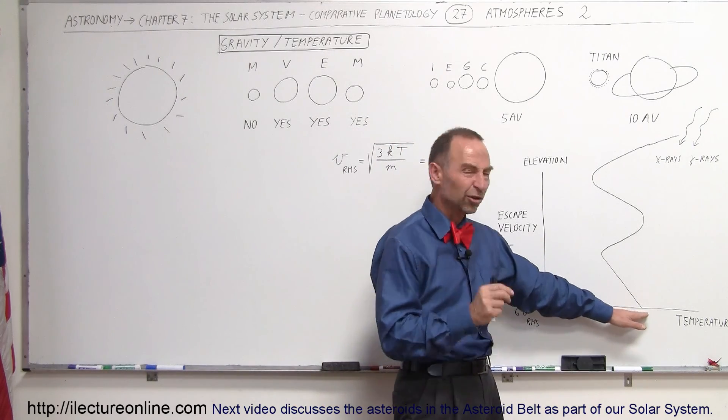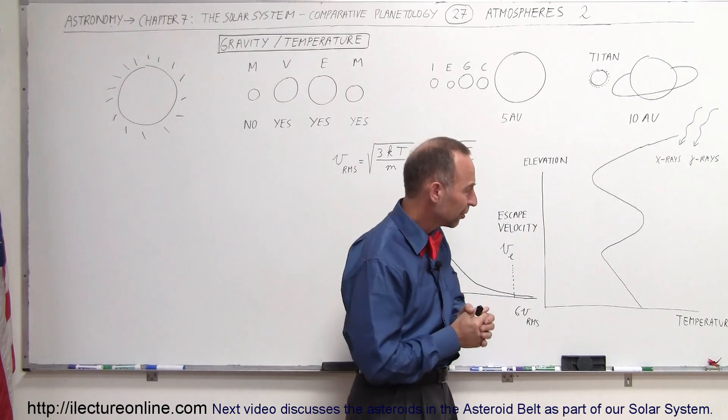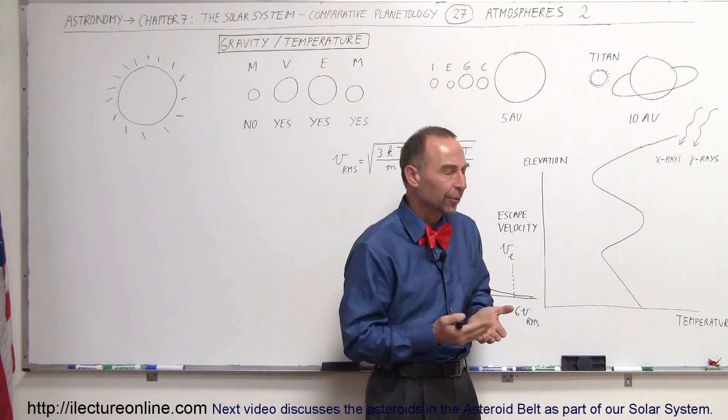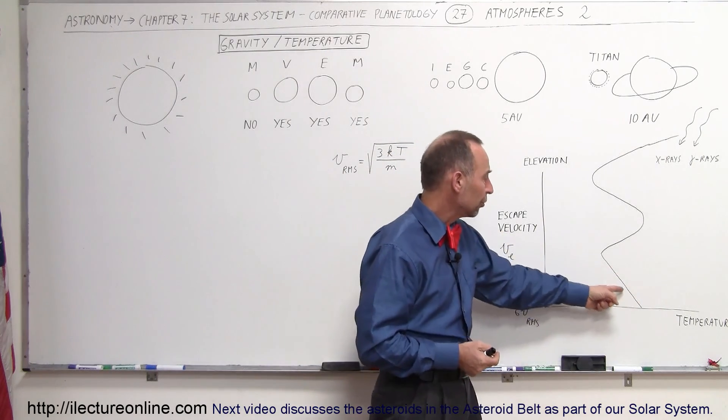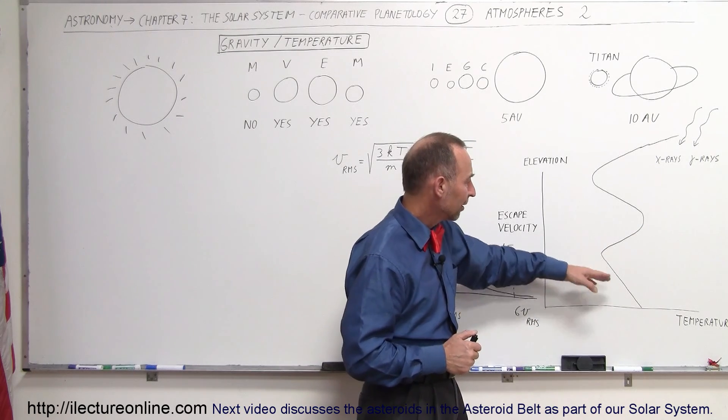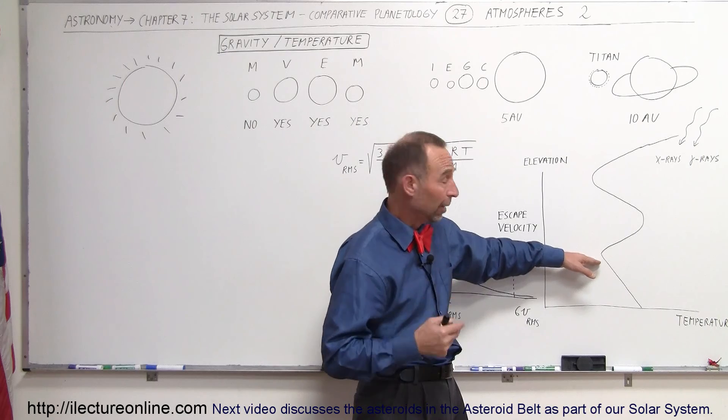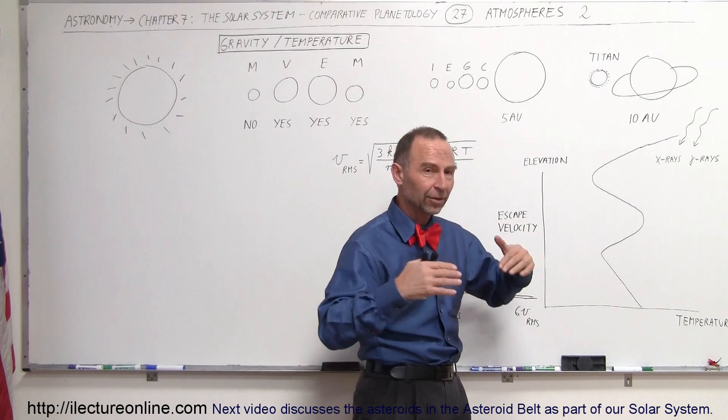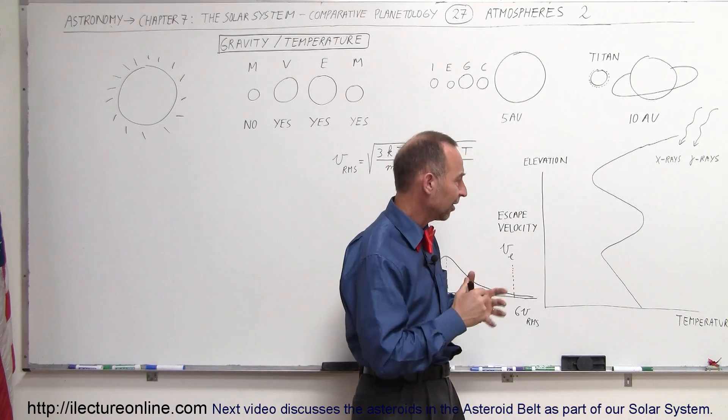For example, at the surface of the Earth, the temperature is typically 50, 60 degrees Fahrenheit, about 15 degrees centigrade. As you go further up into the atmosphere, into the troposphere, you can see that the temperature declines as you go farther up. Most people are aware of that. You go up into the mountains, high up in an airplane, the air outside is much cooler.